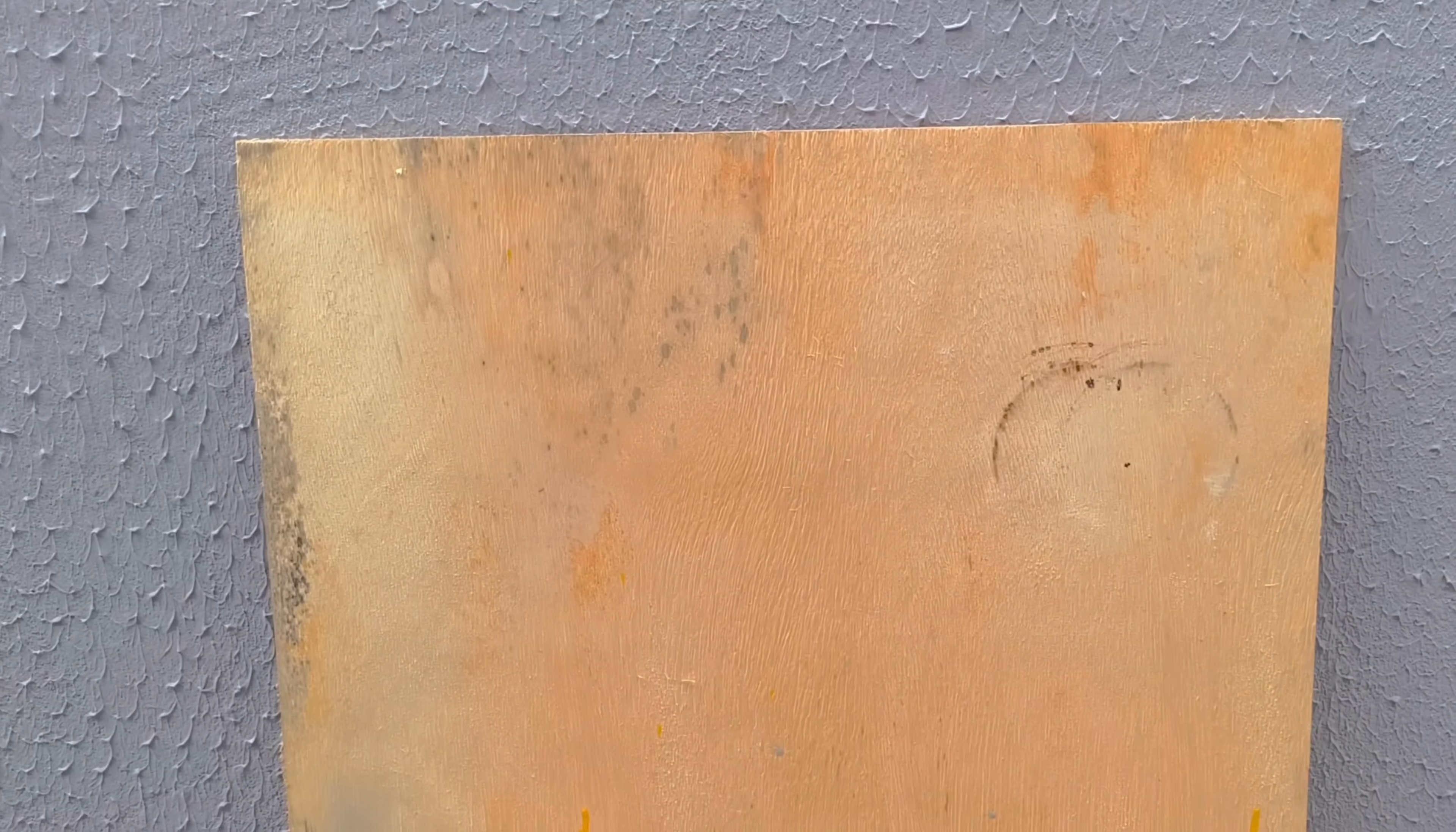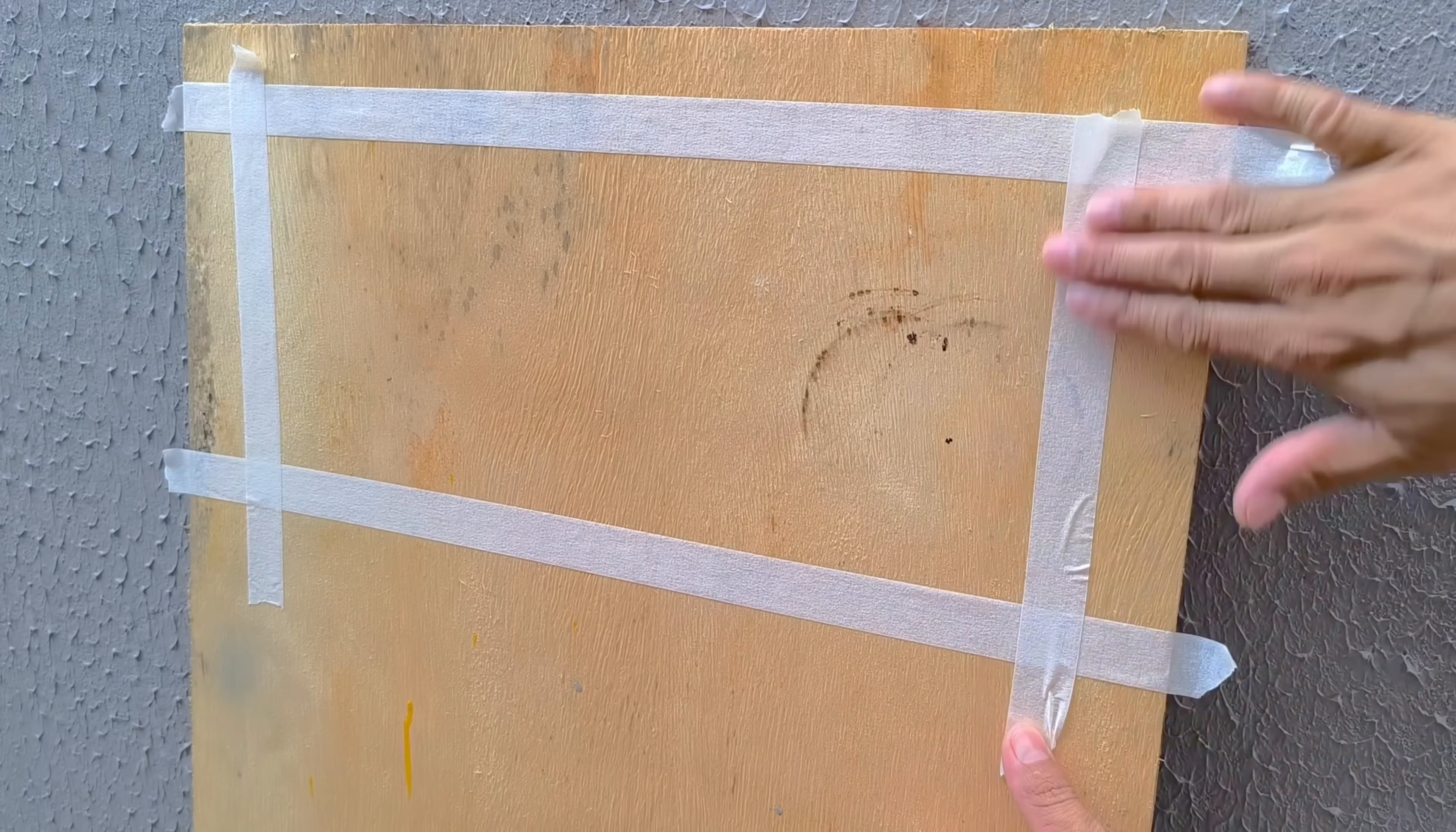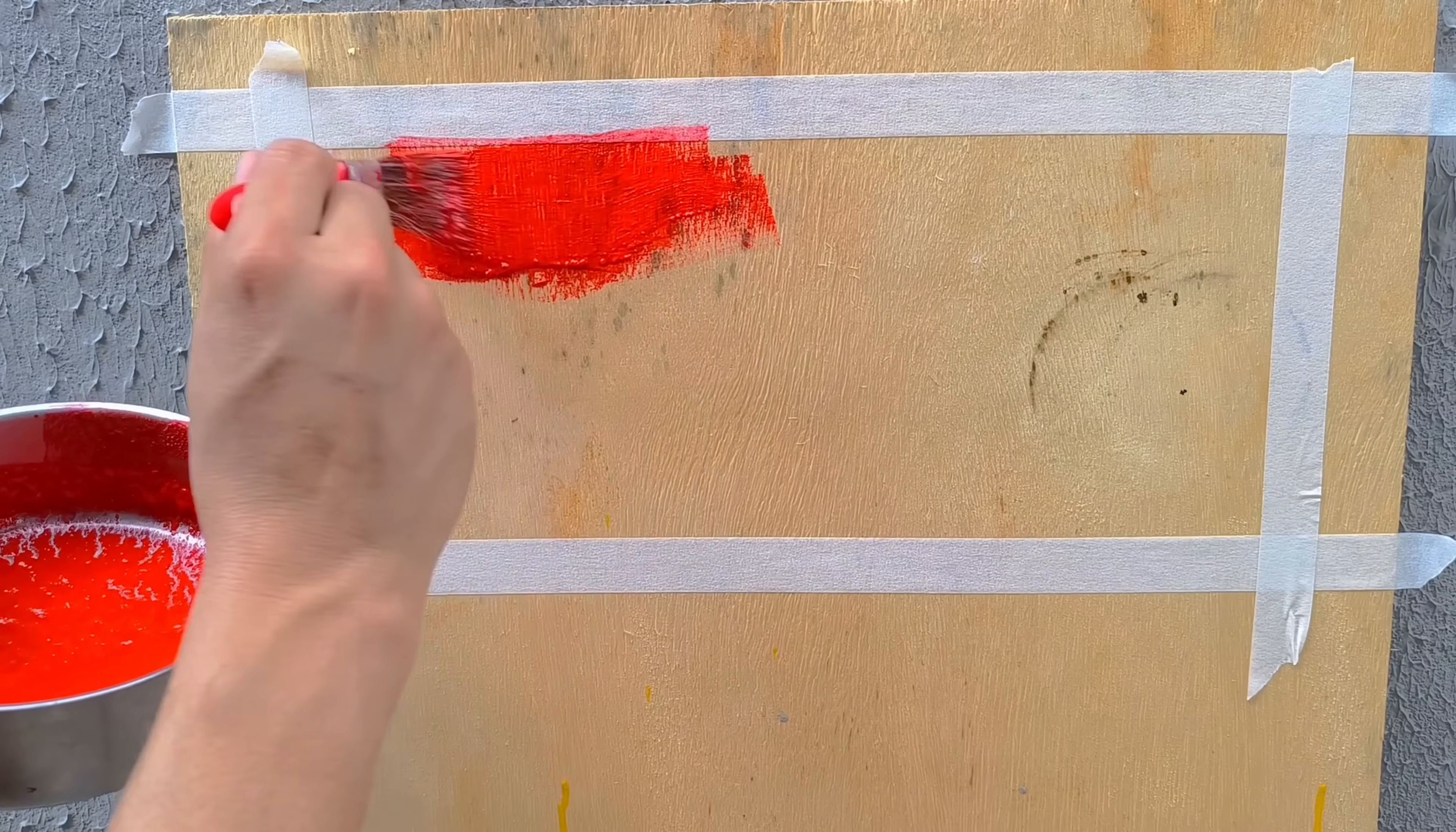But I don't stop there. I want to test the limits of this homemade paint. I place before me an ancient piece of wood, battered by the sun, the rain, and the relentless passing of the long years. Brush in hand, I spread the mixture over the wood surface. There's no need for a white primer or any special preparation. The material absorbs the paint on its own, as if it were made for it.